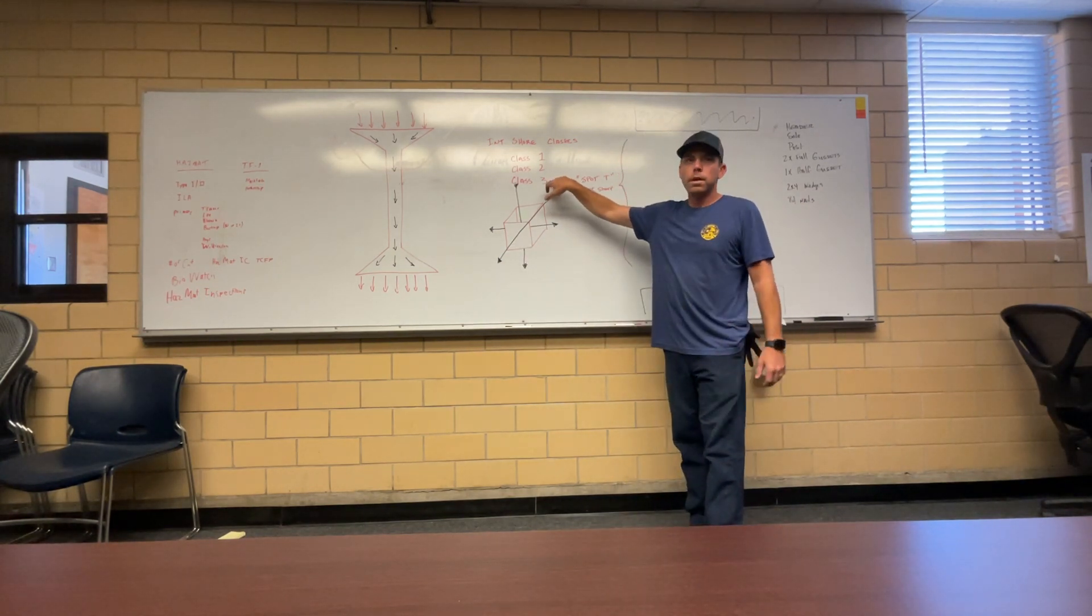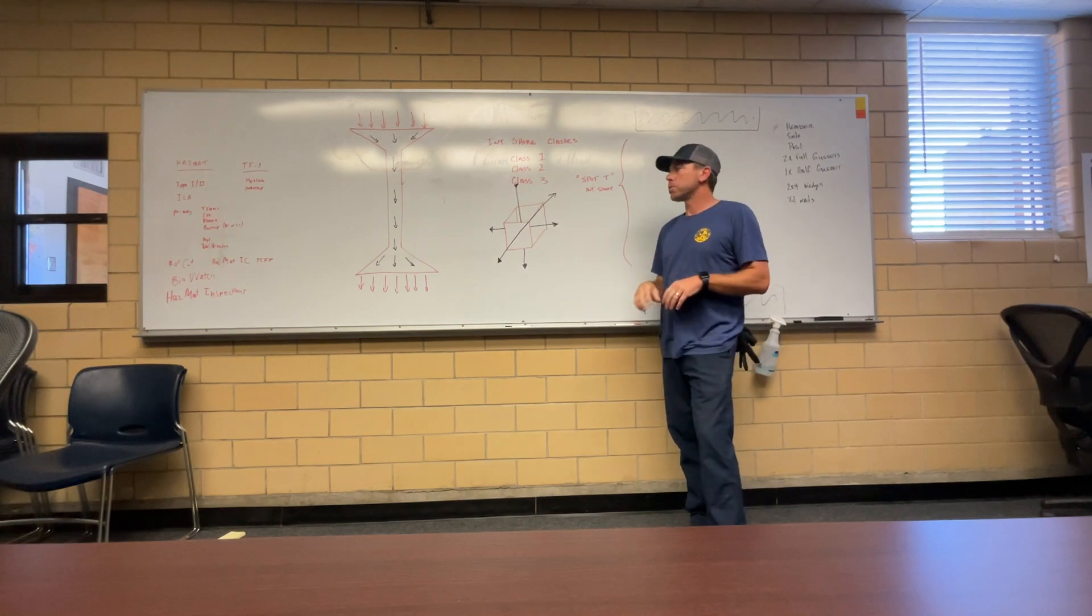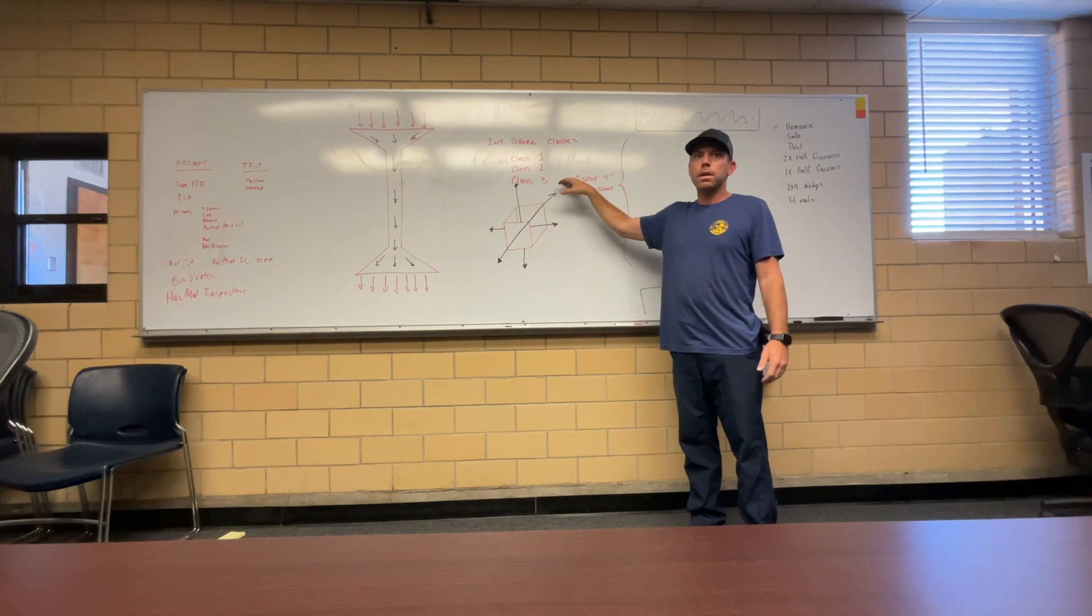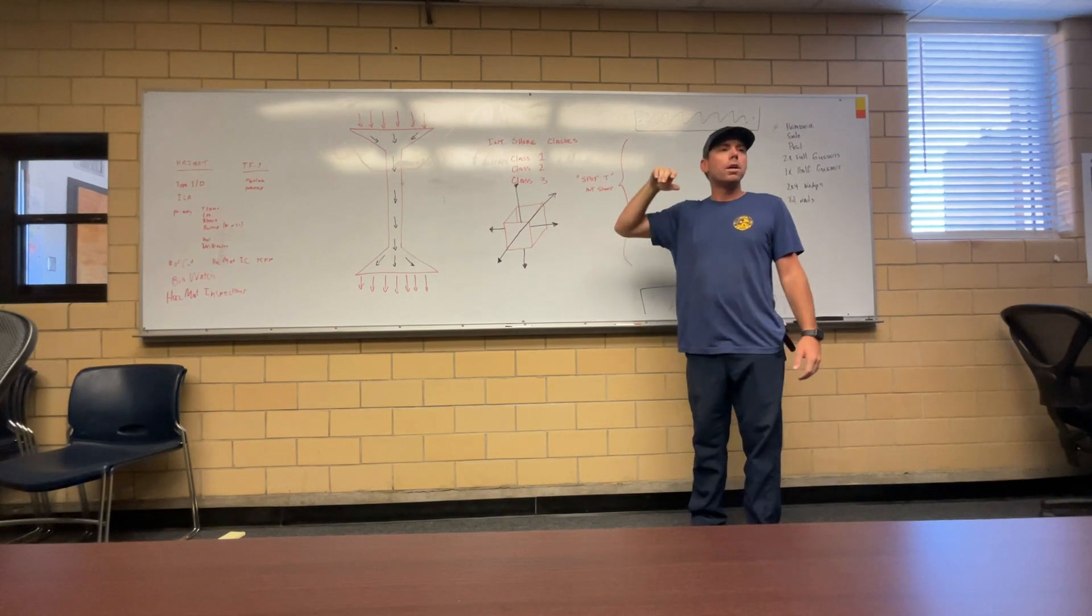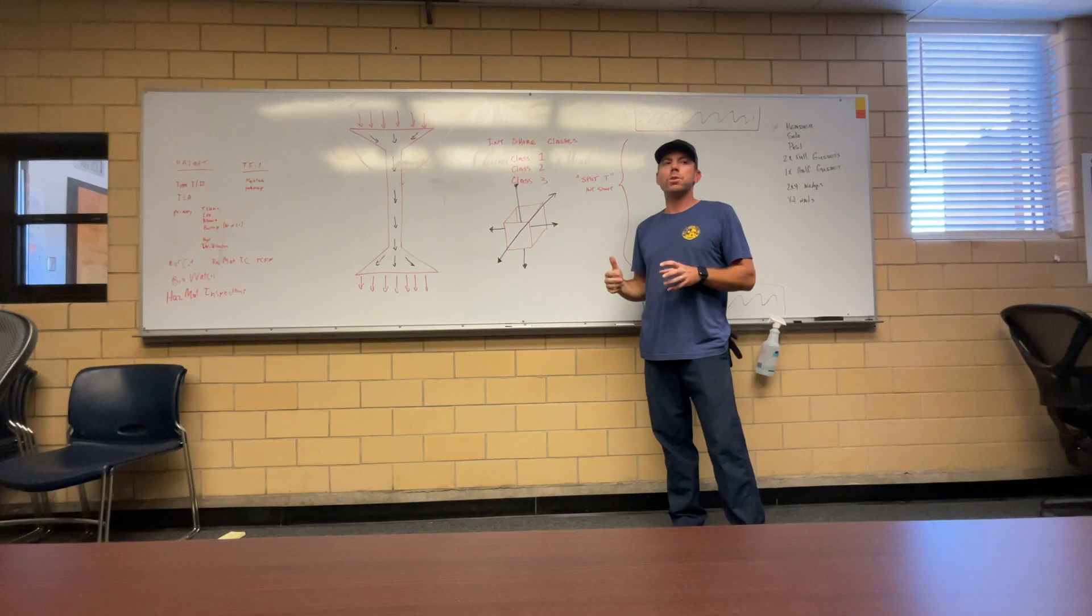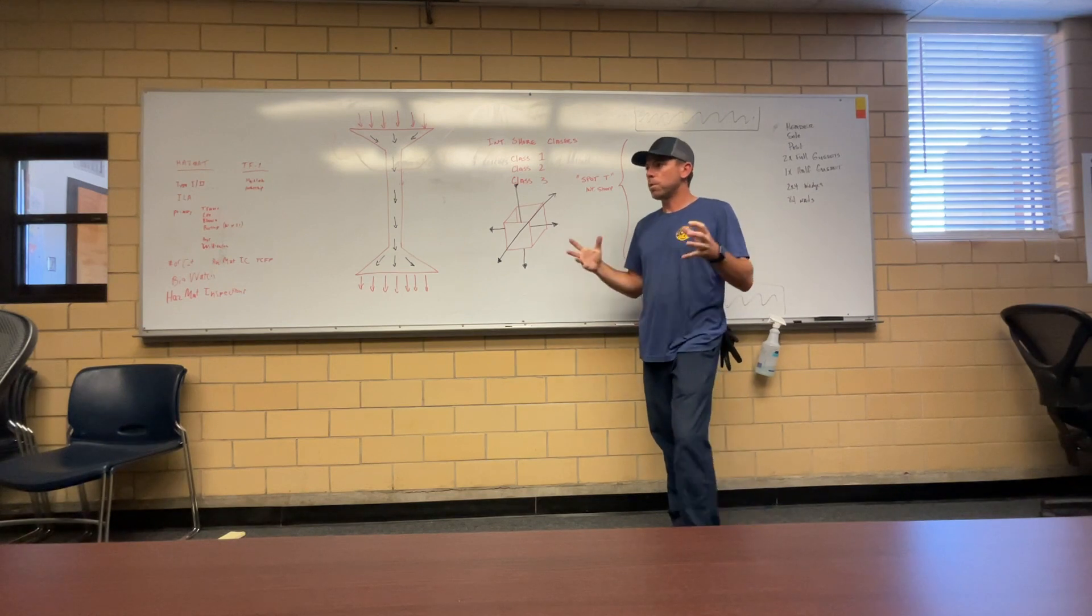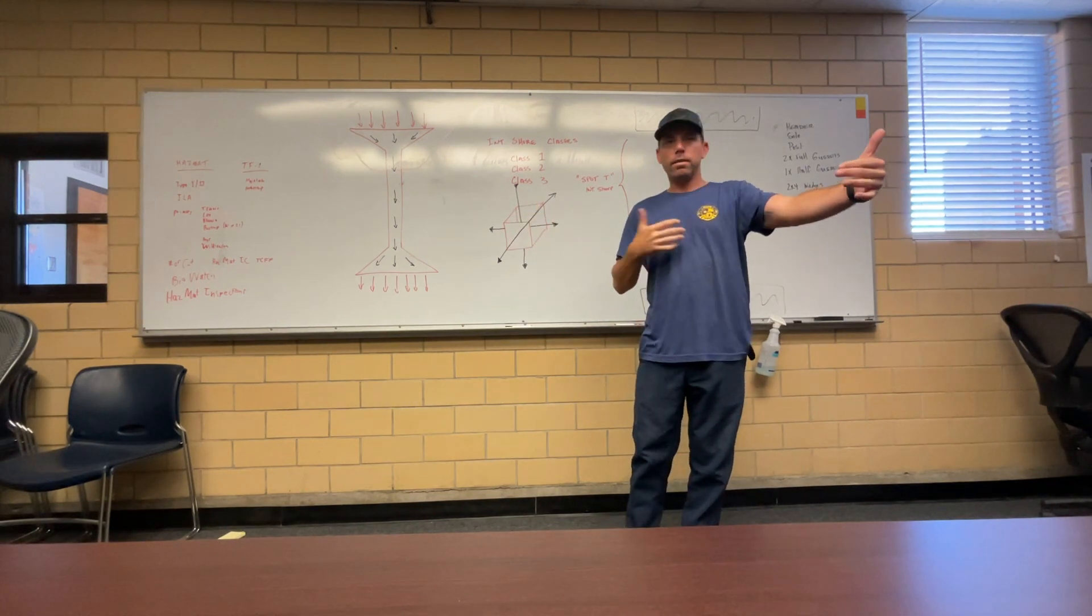Our last one is a class three shore. A class three shore does everything that a class one and a class two does, with the addition that it resists movement in the structure in all directions. And so a class three would be our lace post box. Basically, we're building a big, wide, four foot on center maximum new column out of dimensional lumber.